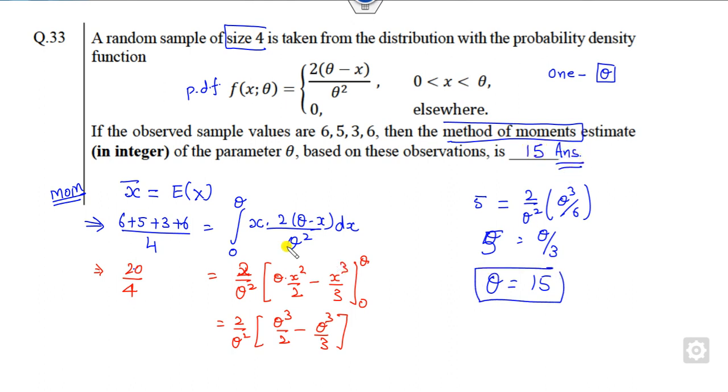So that is a simple one line integration you can solve with the help of method of moments. Sample mean is nothing but my population mean. So once you integrate, you will get the right answer as theta equals 15. Since there is only one unknown parameter, that is why we are solving here. If you have another, then you have to find the second unknown parameter, that is my sigma, the variance, which is E of x squared and so on.